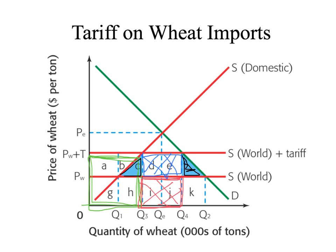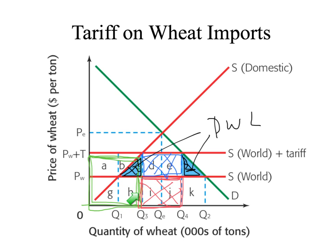There's something interesting going on here — part C is also deadweight loss. This triangle represents a loss of consumer surplus as a result of only Q4 being demanded in the marketplace instead of Q2, so this is a loss of welfare. But C represents a deadweight loss too, because this quantity from Q1 to Q3 used to be produced by more efficient foreign producers, but is now being produced by domestic producers in a more inefficient way — a misallocation of the world's resources. So C ends up being representative of deadweight loss also.